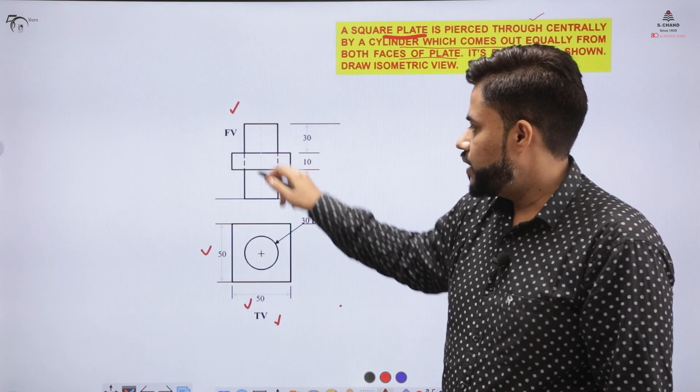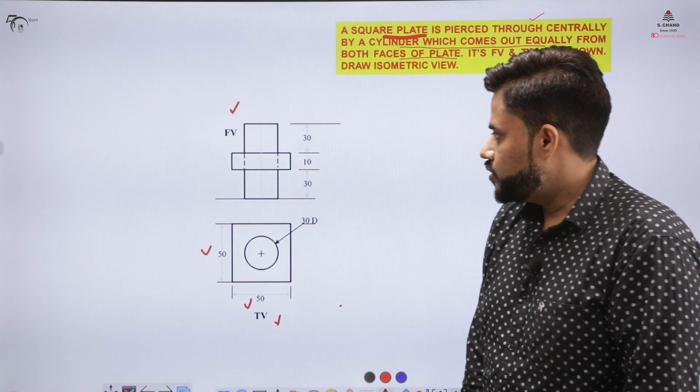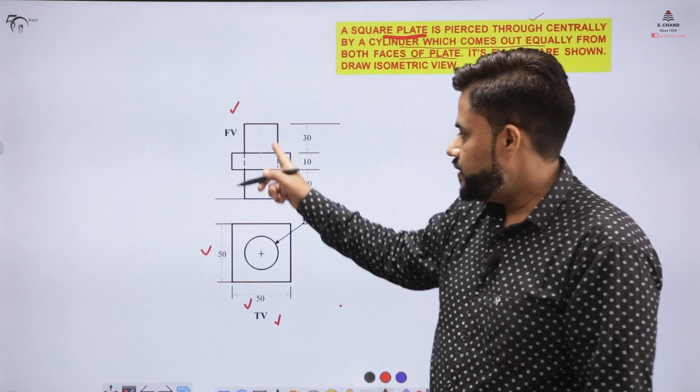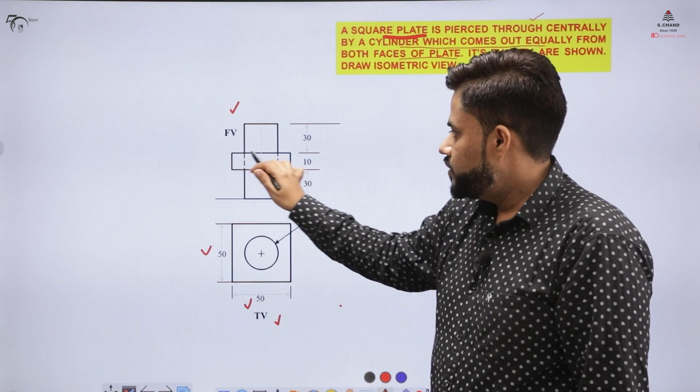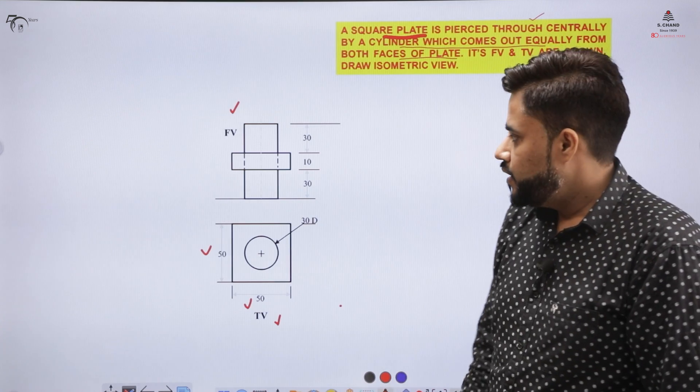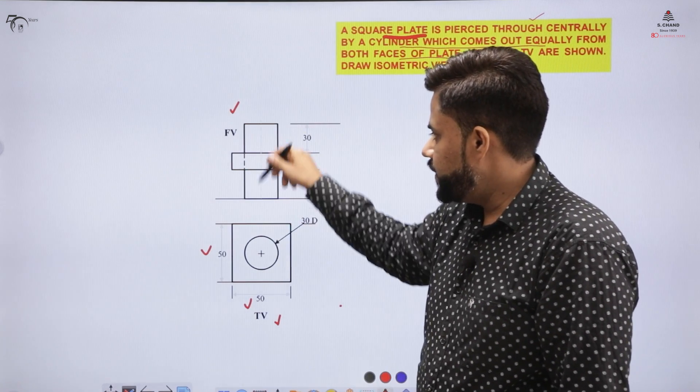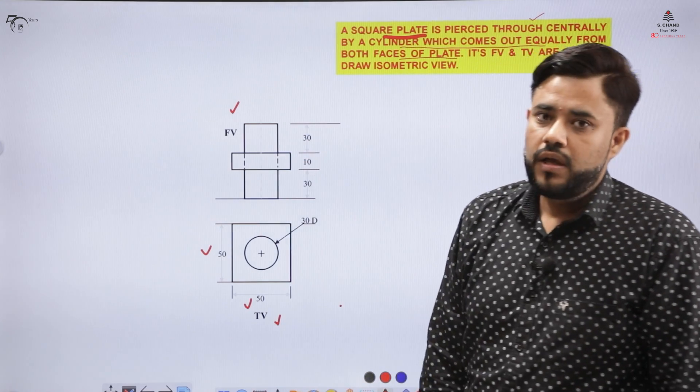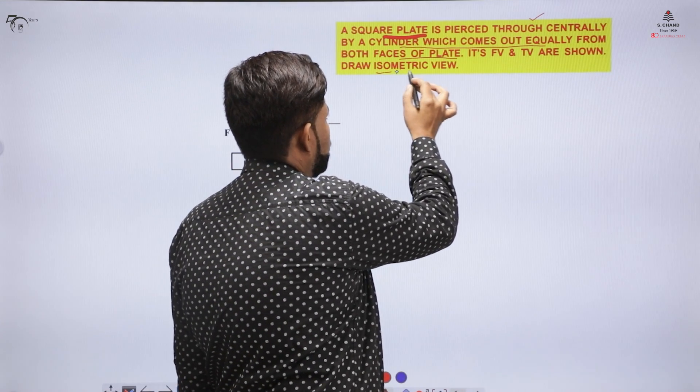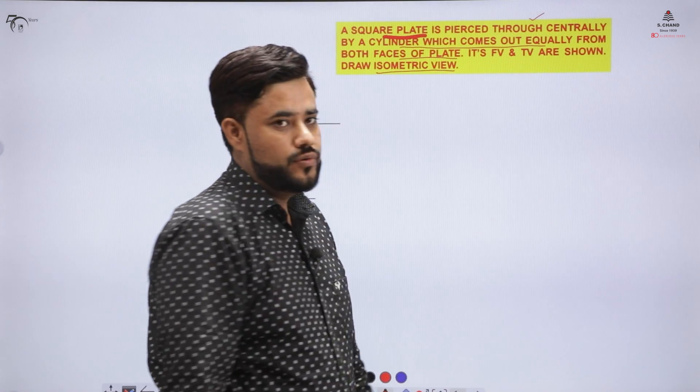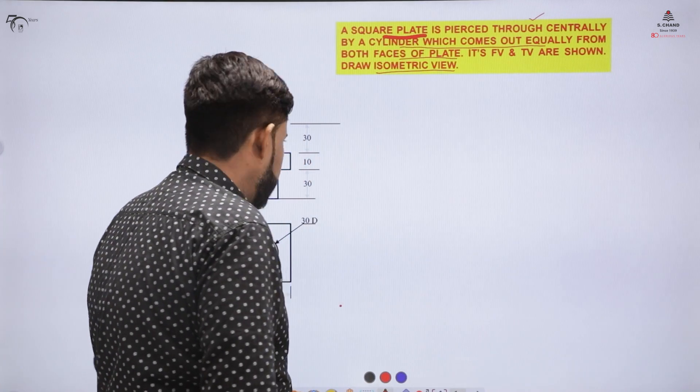You have a rectangle in the front view and you have a square in the top view that depicts it is a cylinder. These edges indicate the depth of the square plate that you already have. You have a square plate and the cylinder is piercing the square plate. The question says that you need to draw the isometric view of the same figure which is being shown here.